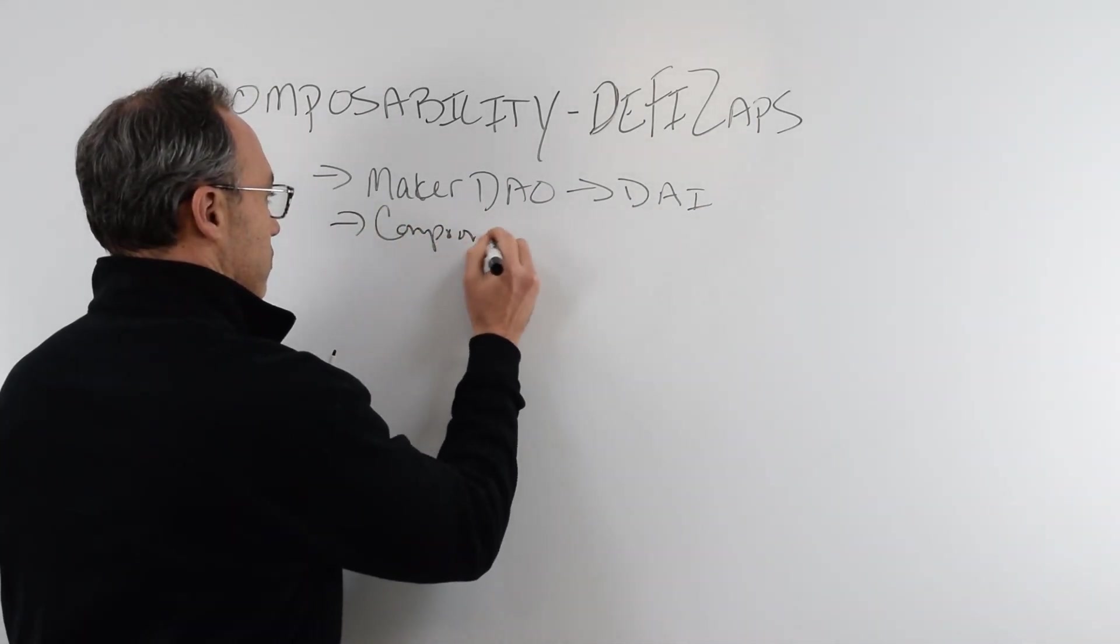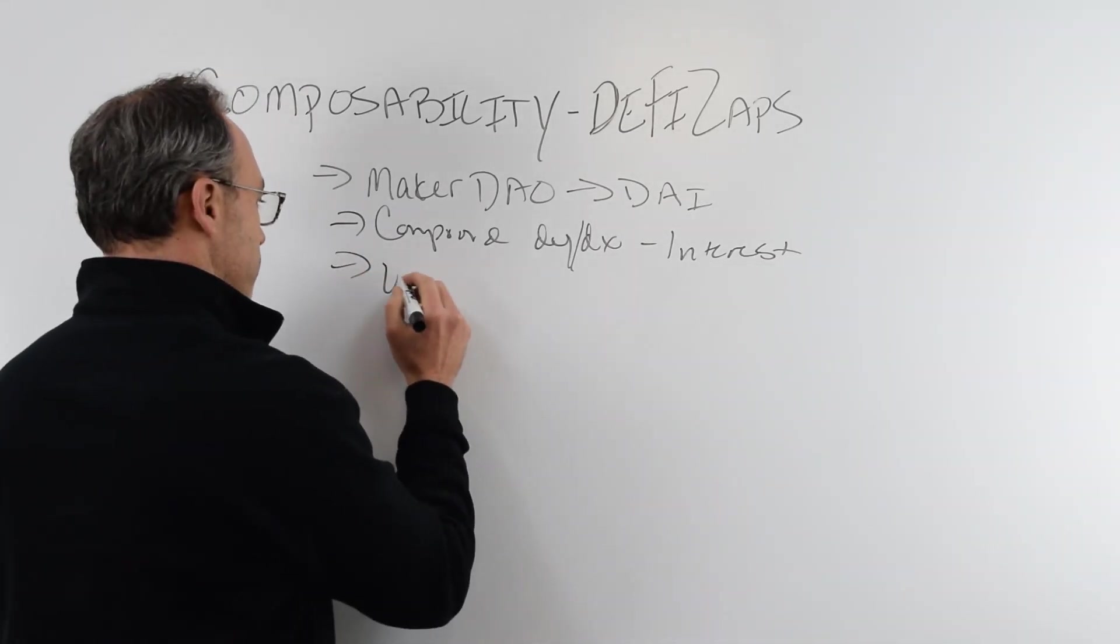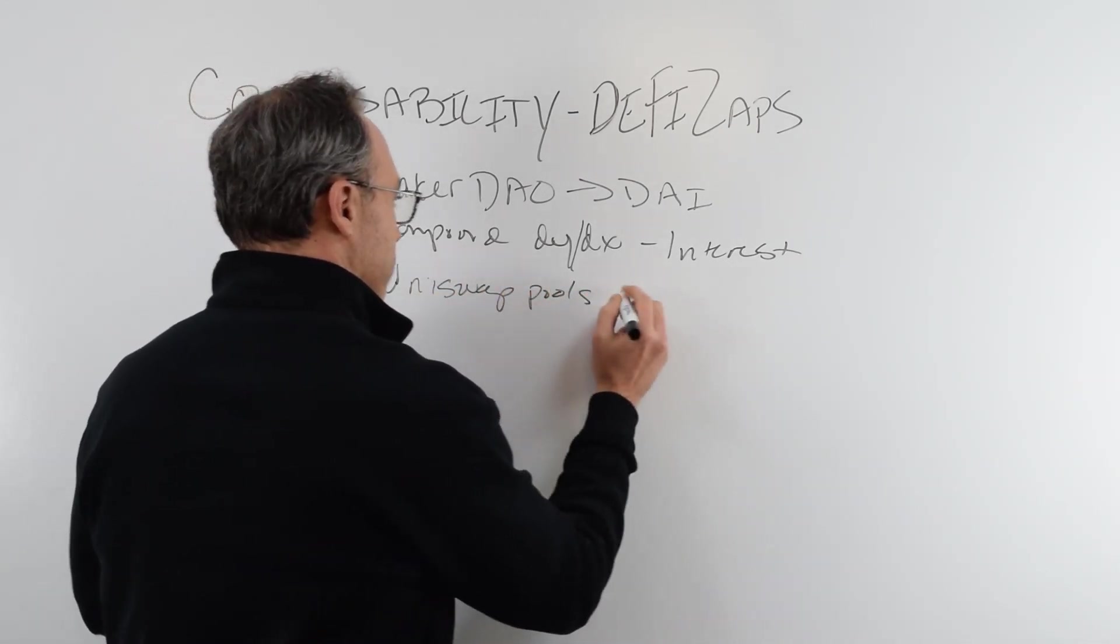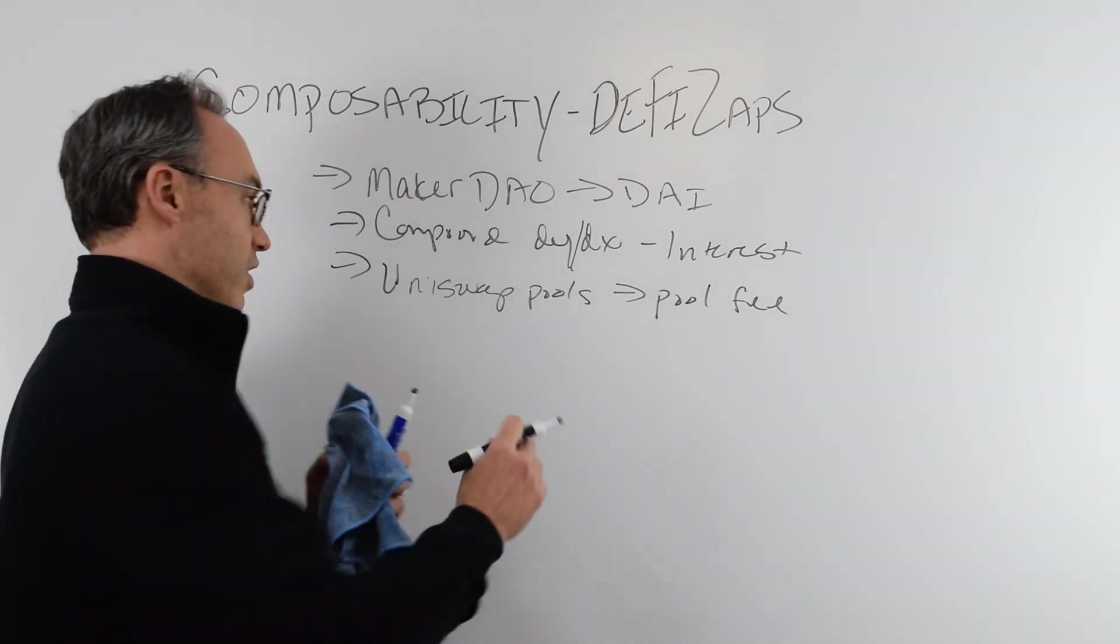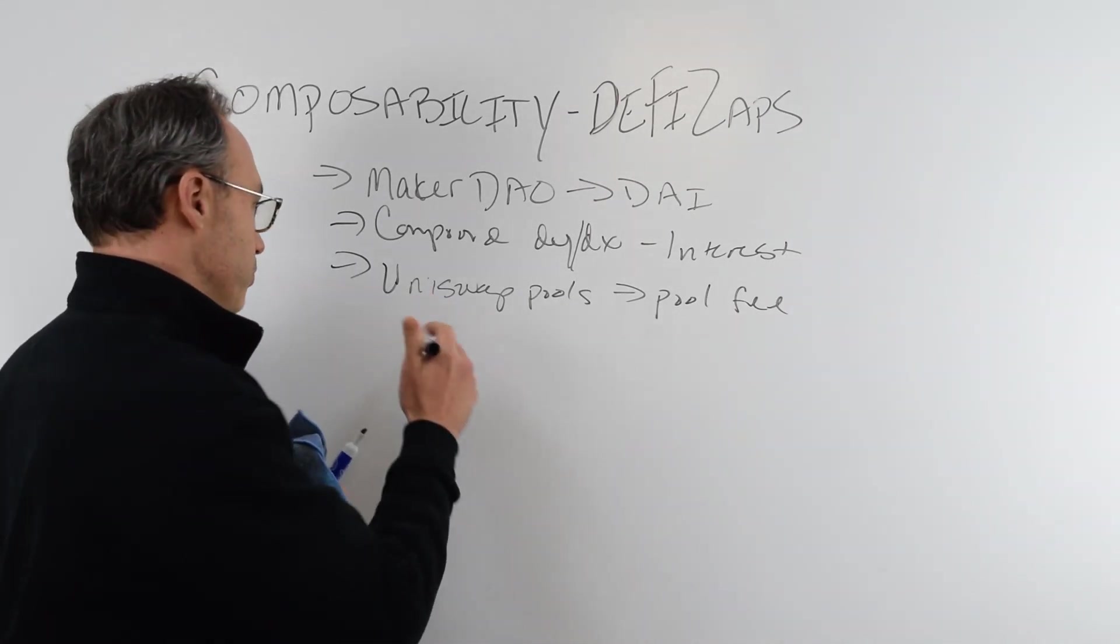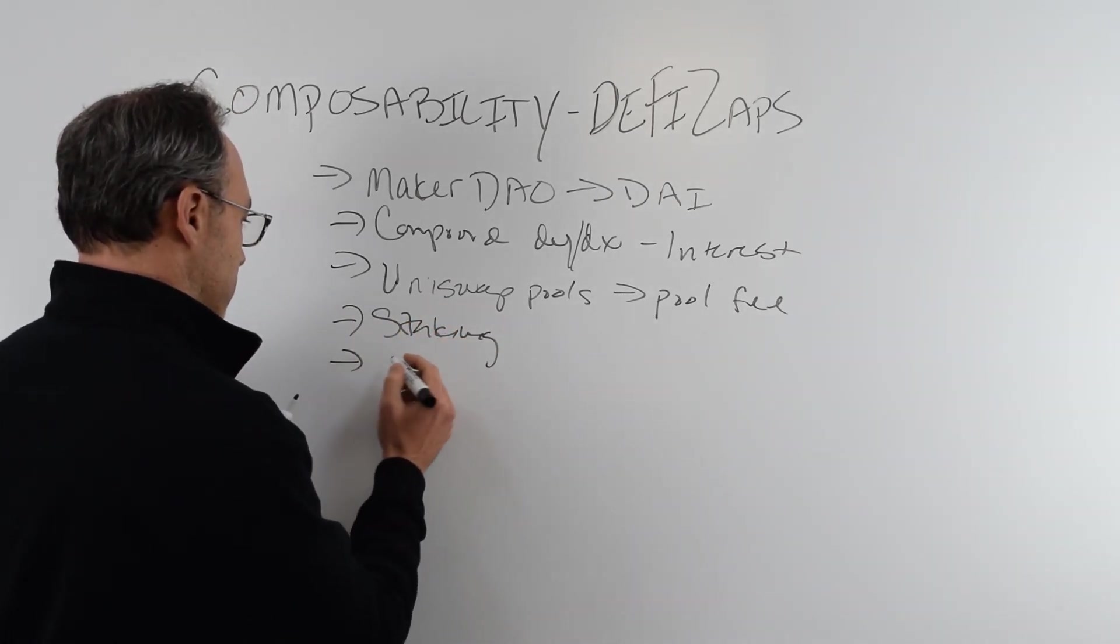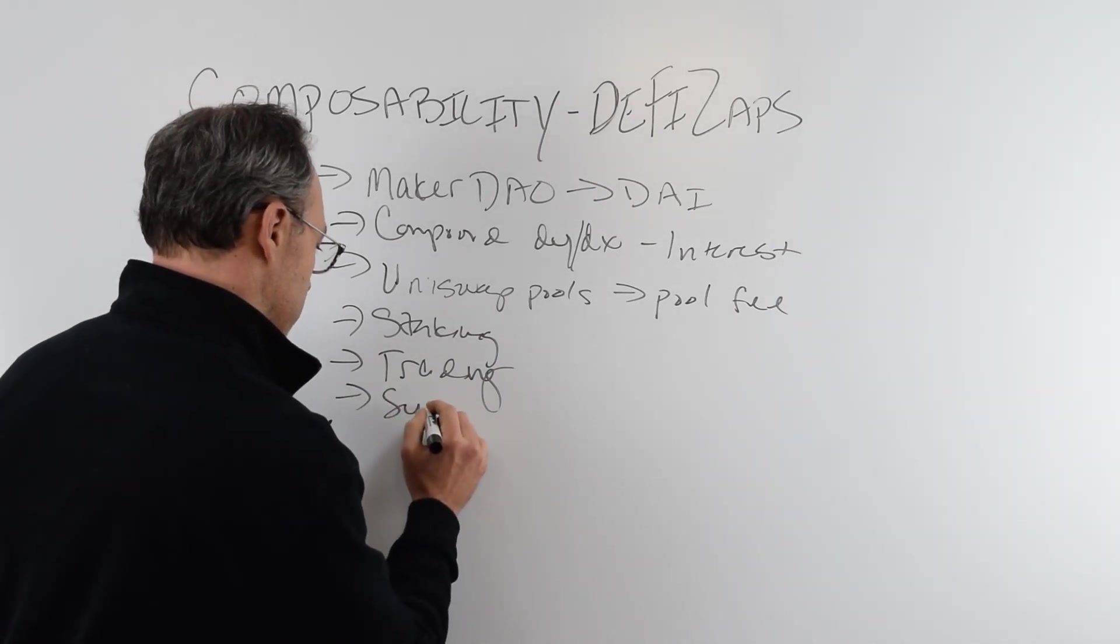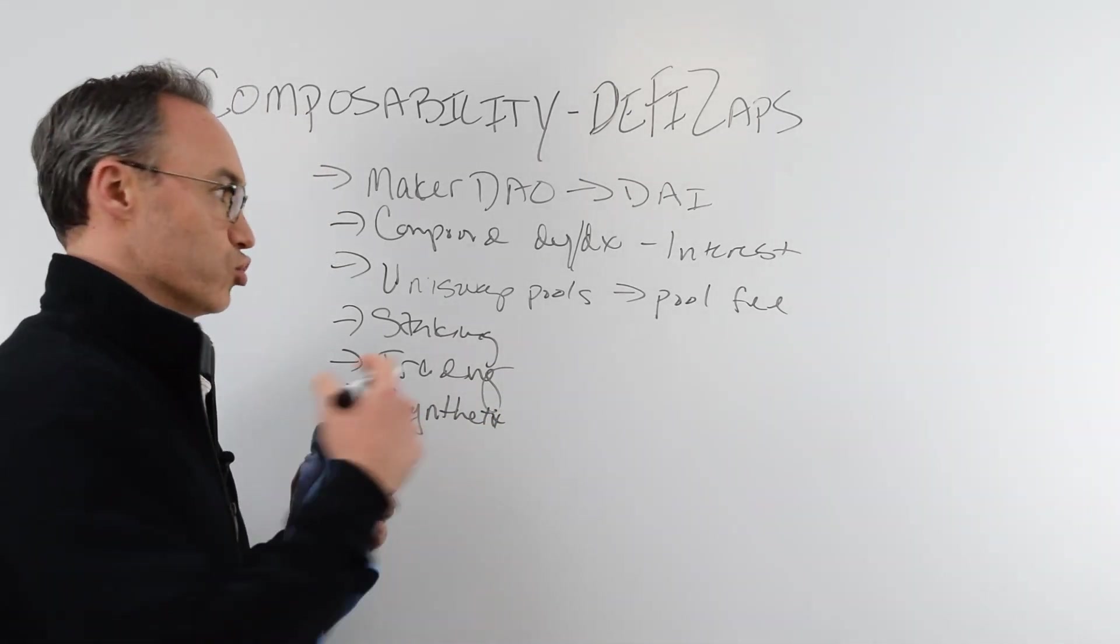You can put your money into Compound or DYDX and earn interest. You can potentially put some of your tokens into Uniswap pools, and then you're earning the pool fee or the transaction fee, the liquidity fee. I'm providing my tokens as liquidity within the Uniswap pools. There's potentially some trading fees. You can be in some sort of synthetics. There are all sorts of ways that you could potentially earn money or grow your wealth.